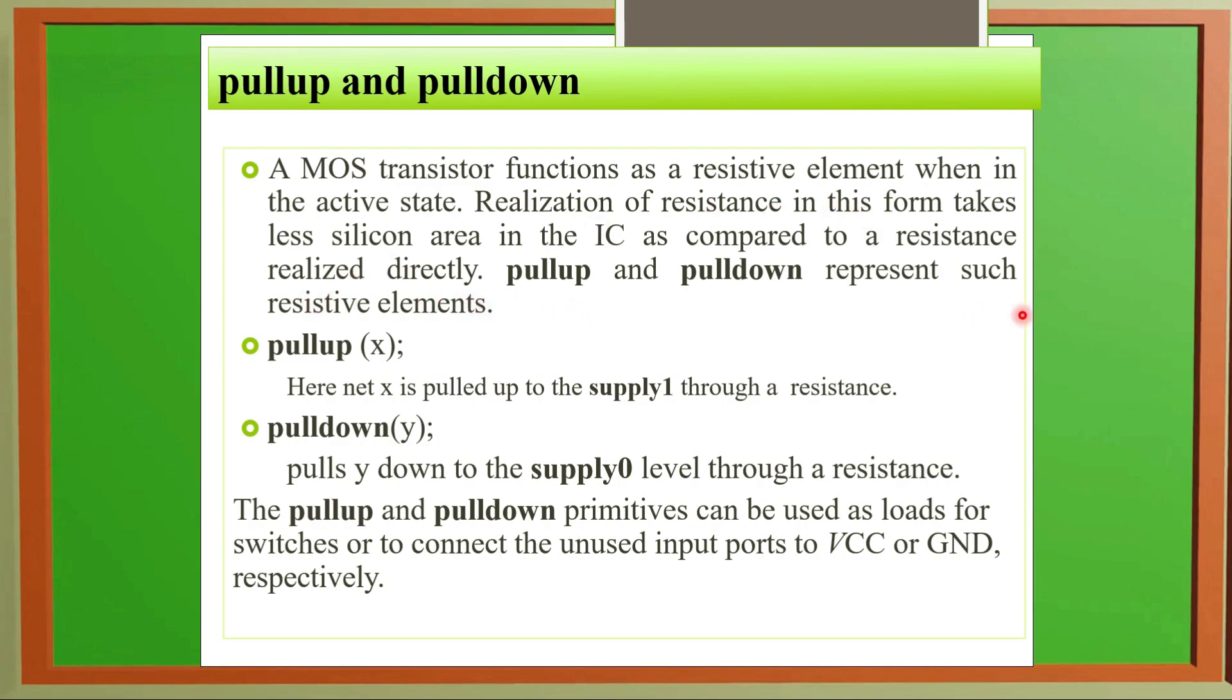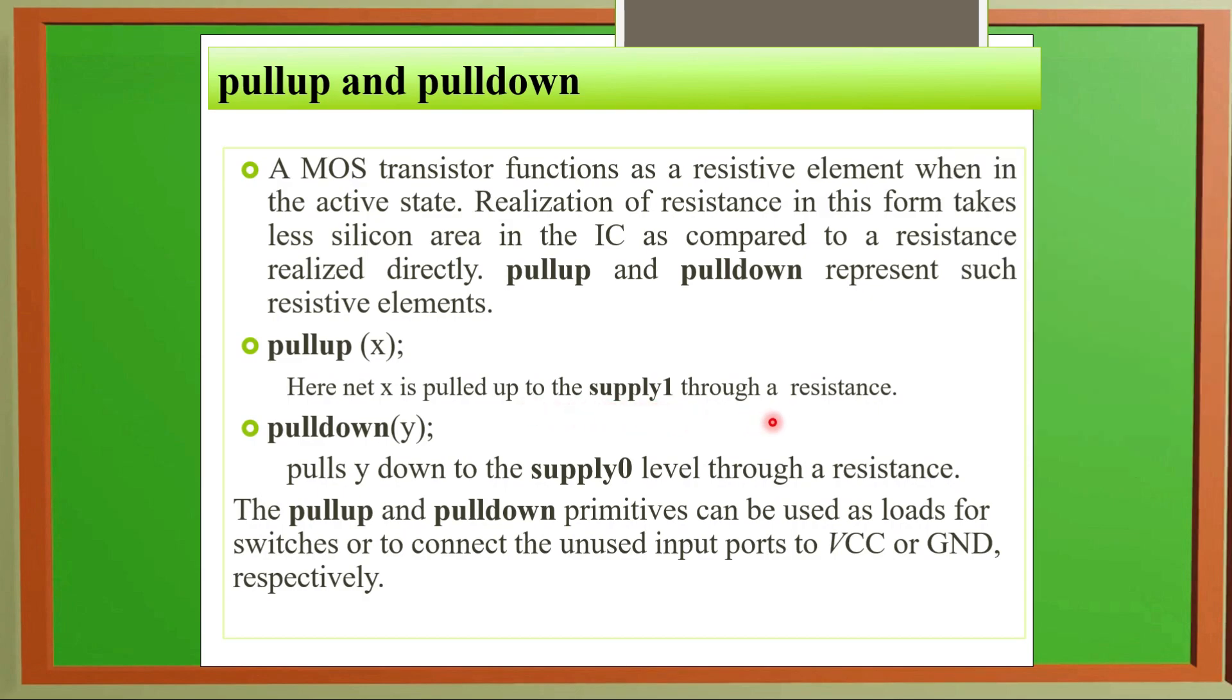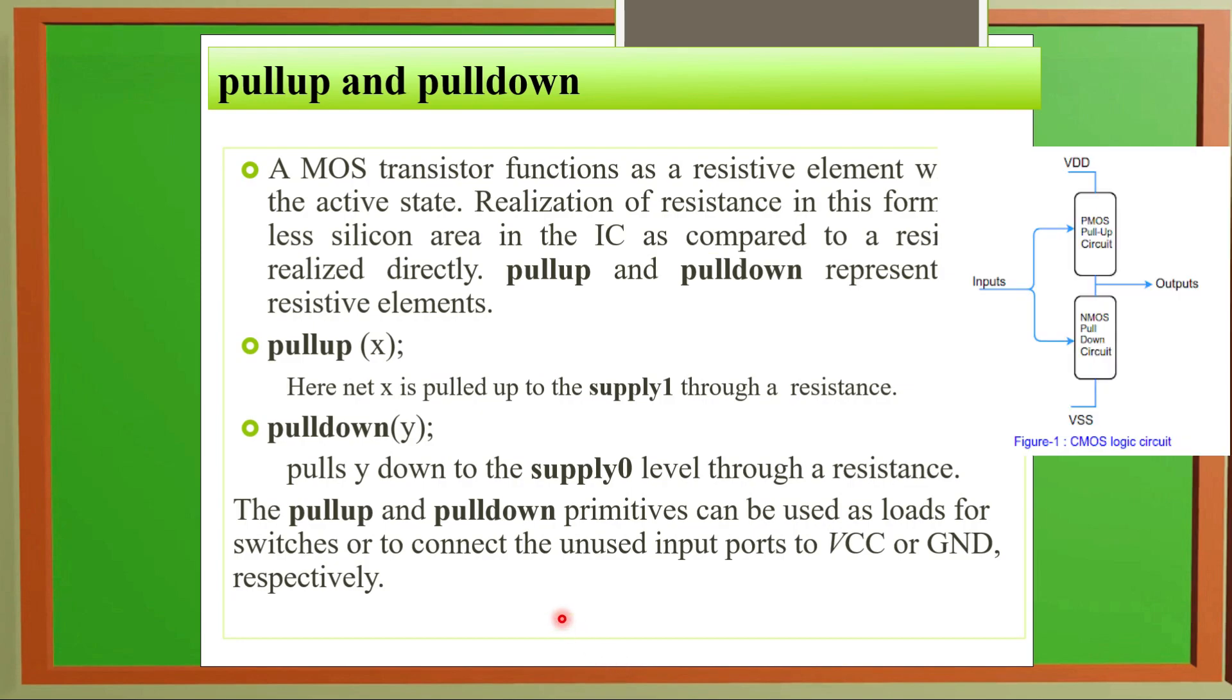When we say pull up, like X, net X is pulled up to supply 1 through a resistance. Pull down, say Y, pulls Y down to supply 0. Supply 1 means going to higher level, termed as pull up. If going to lower level, it is pull down. Pull up and pull down primitives can be used as loads for switches or to connect unused input ports to VCC or ground respectively.